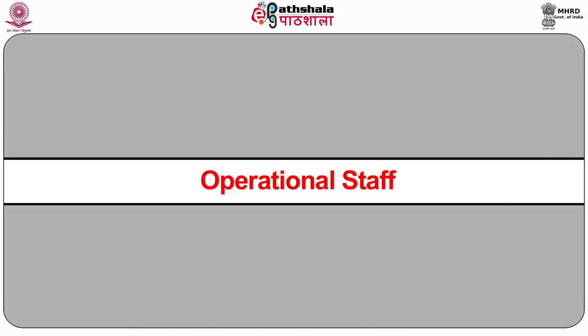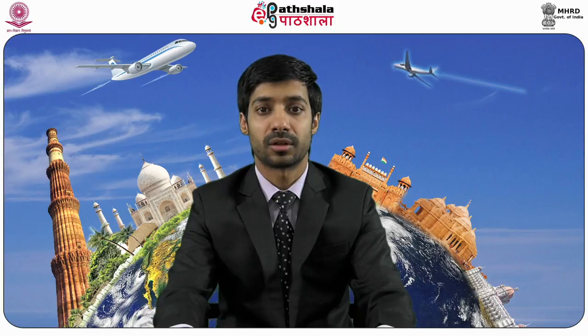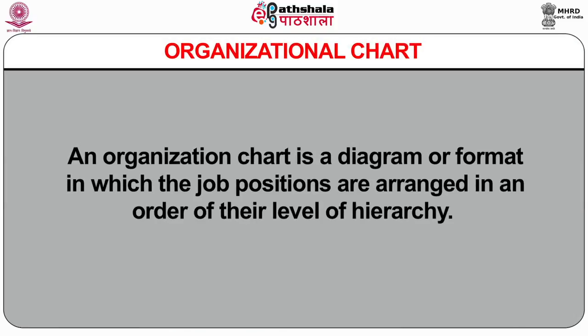Operational staff is at the bottom end of an organizational chart. They are the ones who actually have hands-on the job. Most of the physical work is performed by this category of staff, and they make about 80% of the total staff in an organization. An organization chart is a diagram or format in which the job positions are arranged in an order of their level of hierarchy.